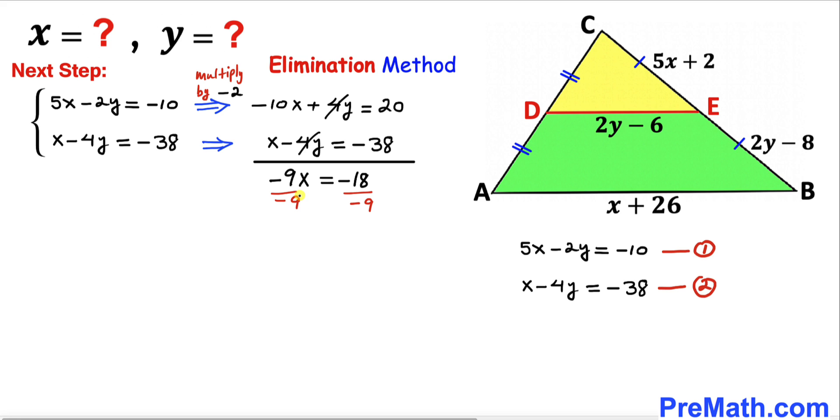Let's divide both sides by negative 9. Therefore, our x value turns out to be positive 2.